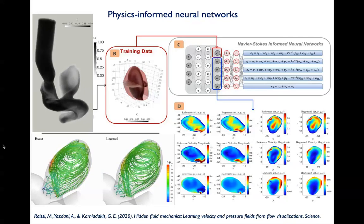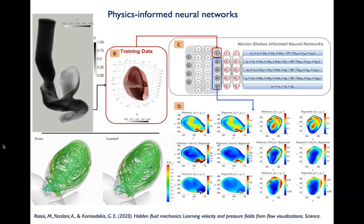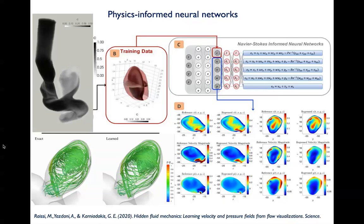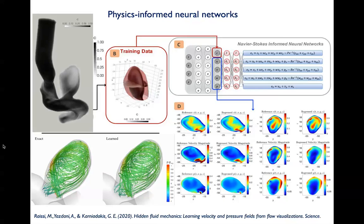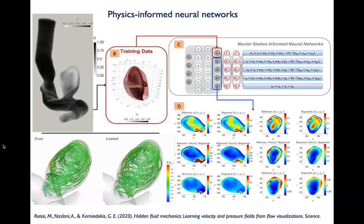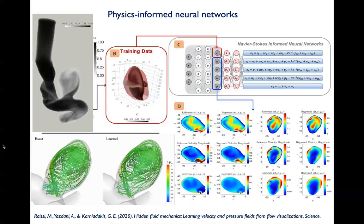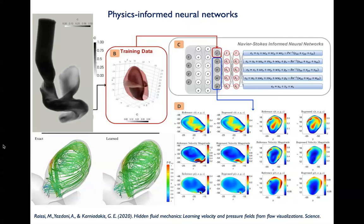By training the neural network to fit concentration measurements while minimizing the PDE residual, the authors were able to accurately predict the underlying velocity and pressure field and reconstruct streamlines. That was an impressive application published in Science. However, there is a catch: everything was done on synthetic CFD data, which is relatively clean. It's more challenging to employ these methods with realistic PIV or 4D flow MRI data that is more heavily corrupted by noise.